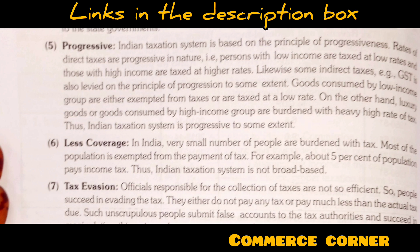The next point is progressive taxation — this is the easiest point. If your income is less, you will pay less tax or may be exempted. If your income is more, then slabs are made. In income tax, slabs are set, for example, if your income is between 2.5 lakhs and 5 lakhs, then you will be taxed at a lower rate.